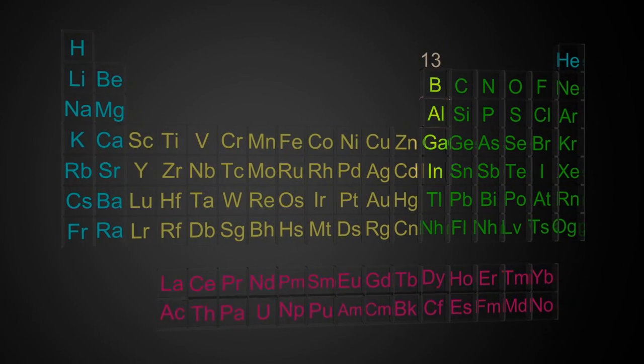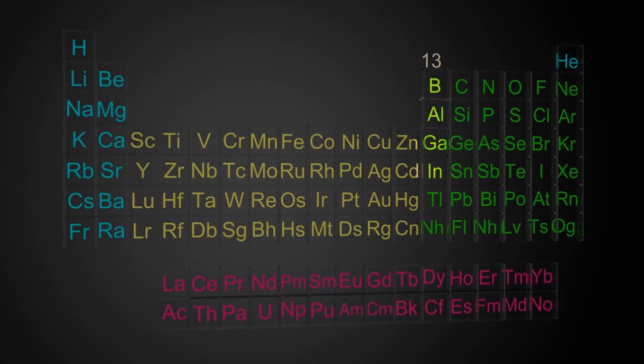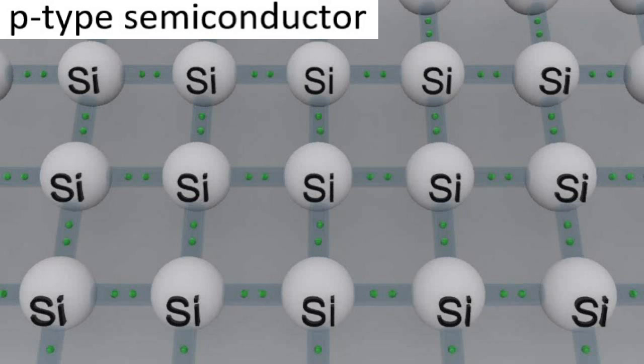Now for p-type semiconductors, you replace or dope a few of the silicon atoms with Group 13 atoms. So let's take a silicon again out of the lattice and replace it with indium, which is Group 13. Now indium only has three valence electrons, so there is now a gap. There is now a missing electron with that right-hand silicon, and that is referred to as a hole. This lack of an electron to bond to that neighboring silicon is called a hole.